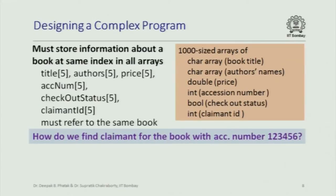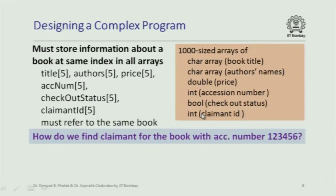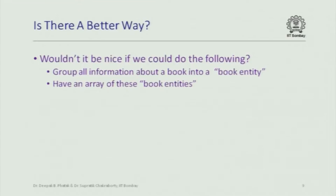For example, if you want to find the claimant for a book with accession number 123456, you would have to search the accession number array, find the index where that number appears, then go to the claimant array and look up that same index. This is a very convoluted way of finding information. Instead, we'd like to group all information about a book together into one entity, and have an array of these entities.